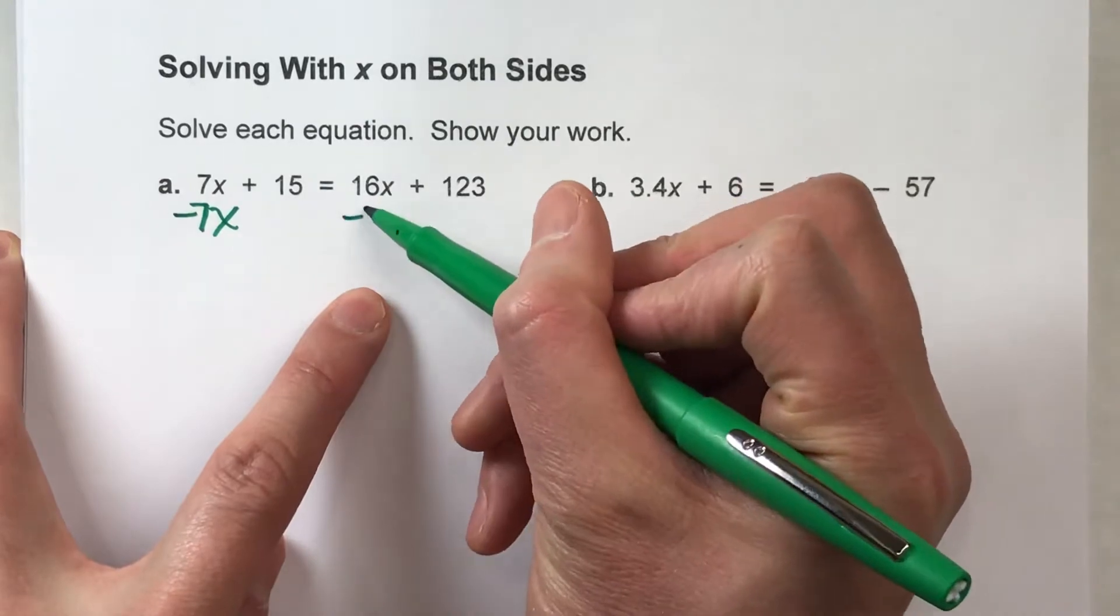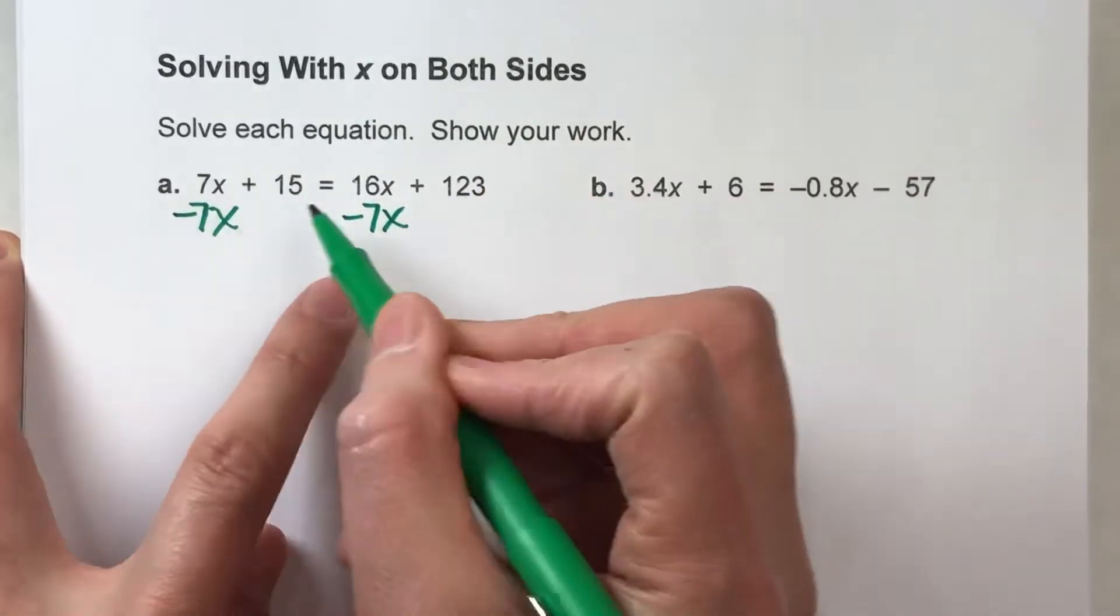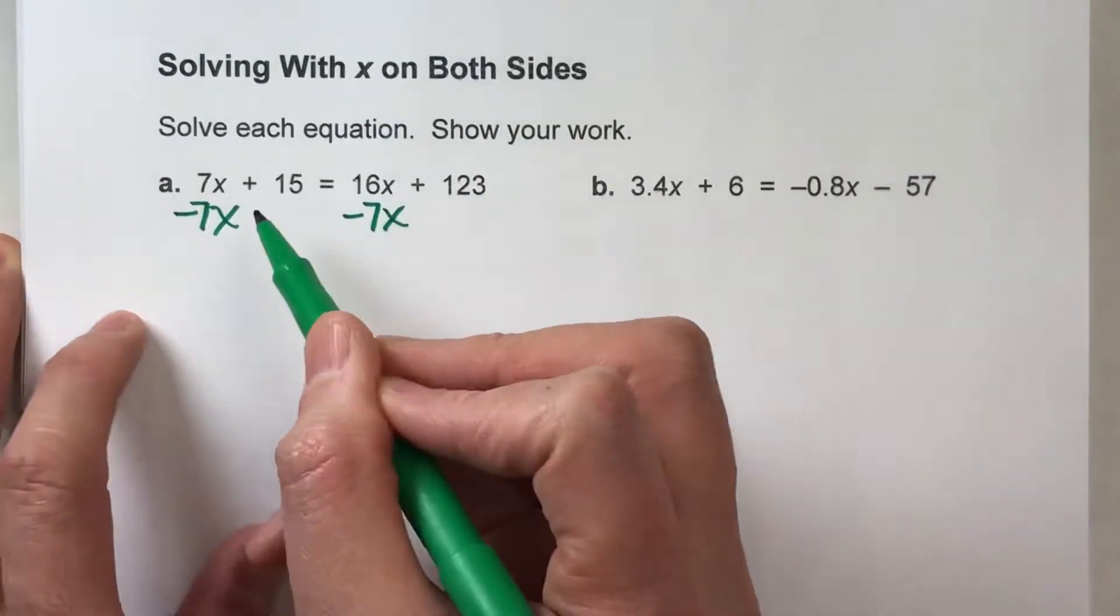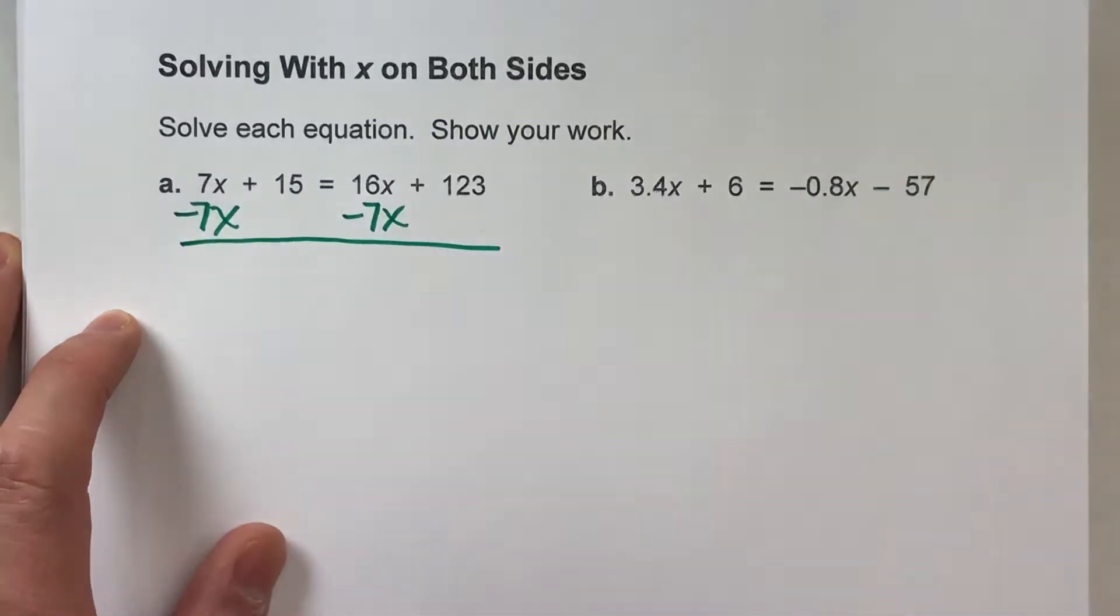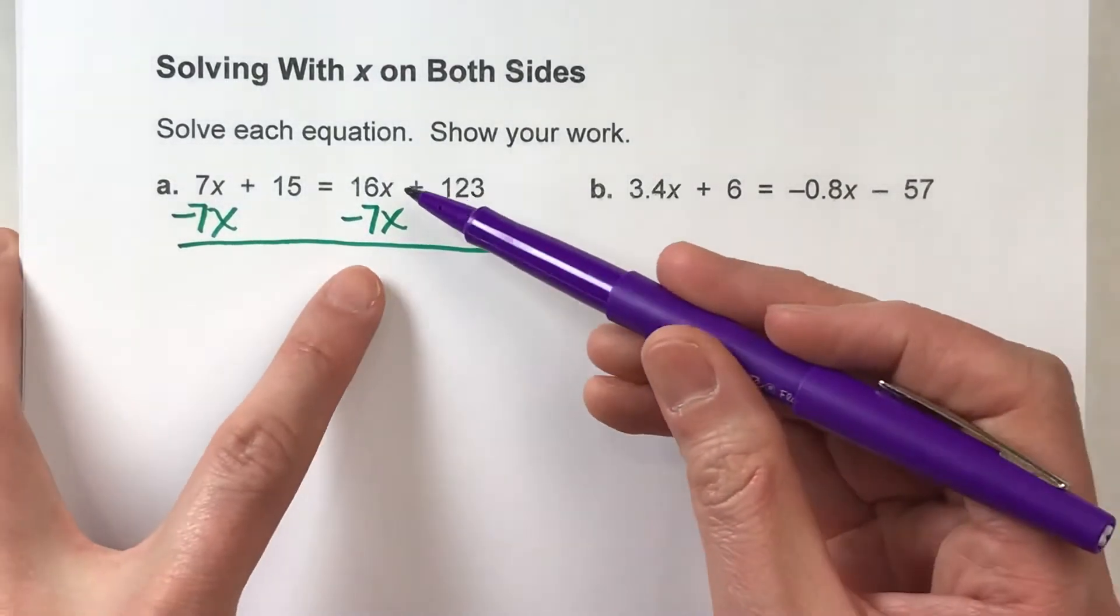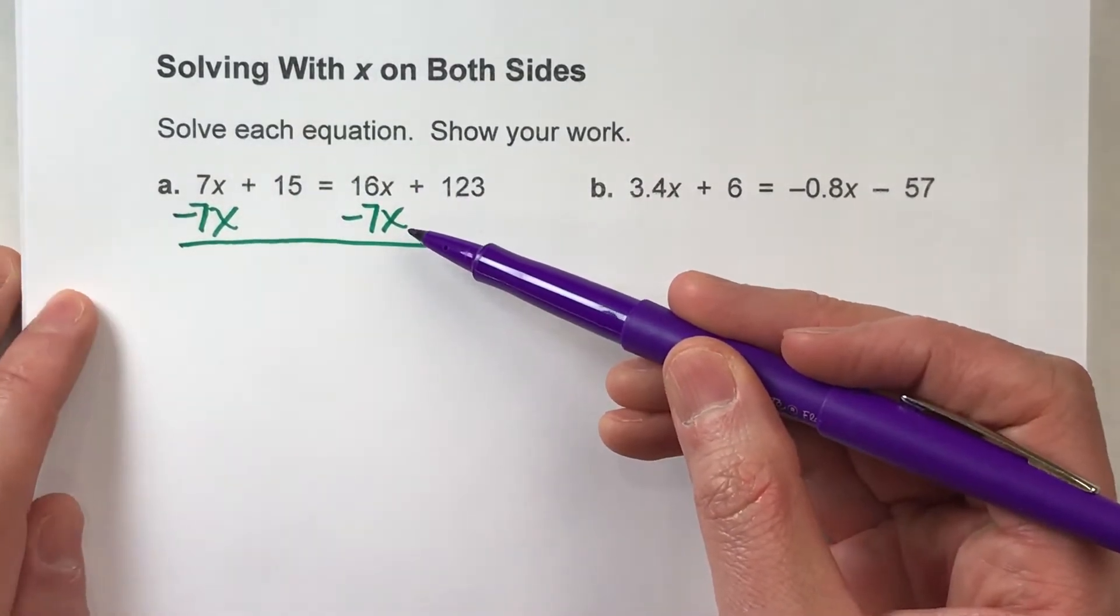But what I do to one side, I have to do to the other. And notice, when I subtract off the 7x over here, I write it under the 16x because, remember, you're going to be subtracting x's from x's.